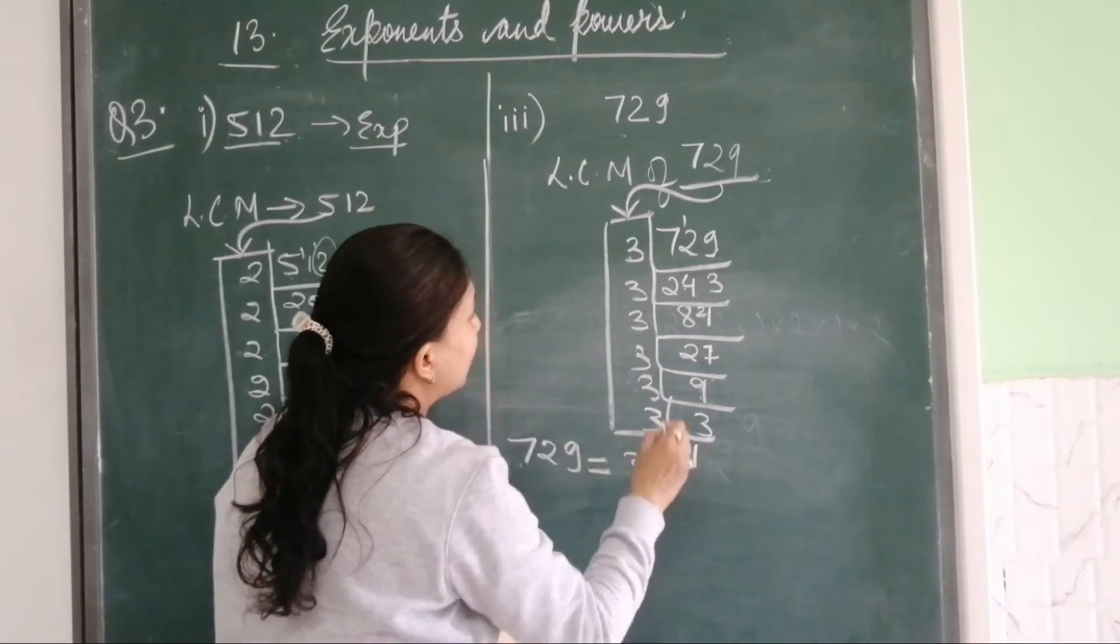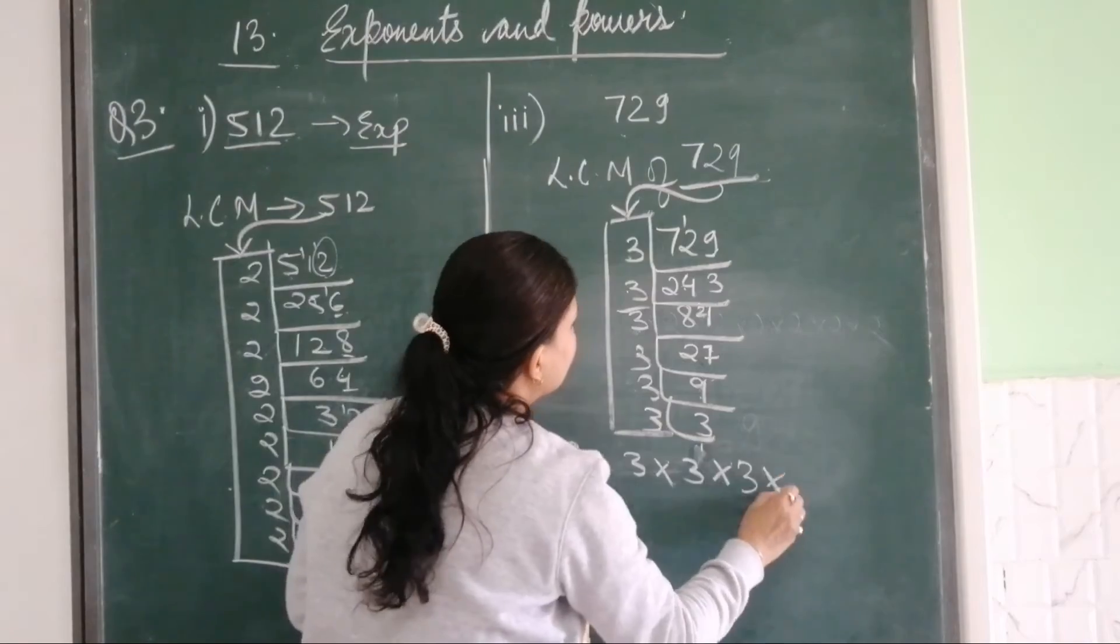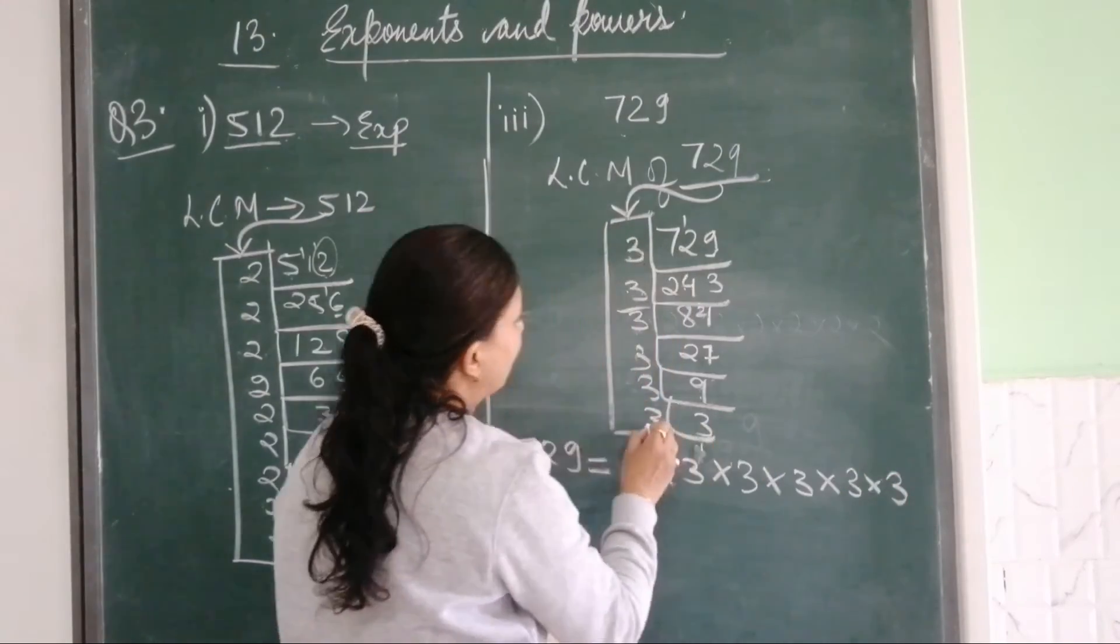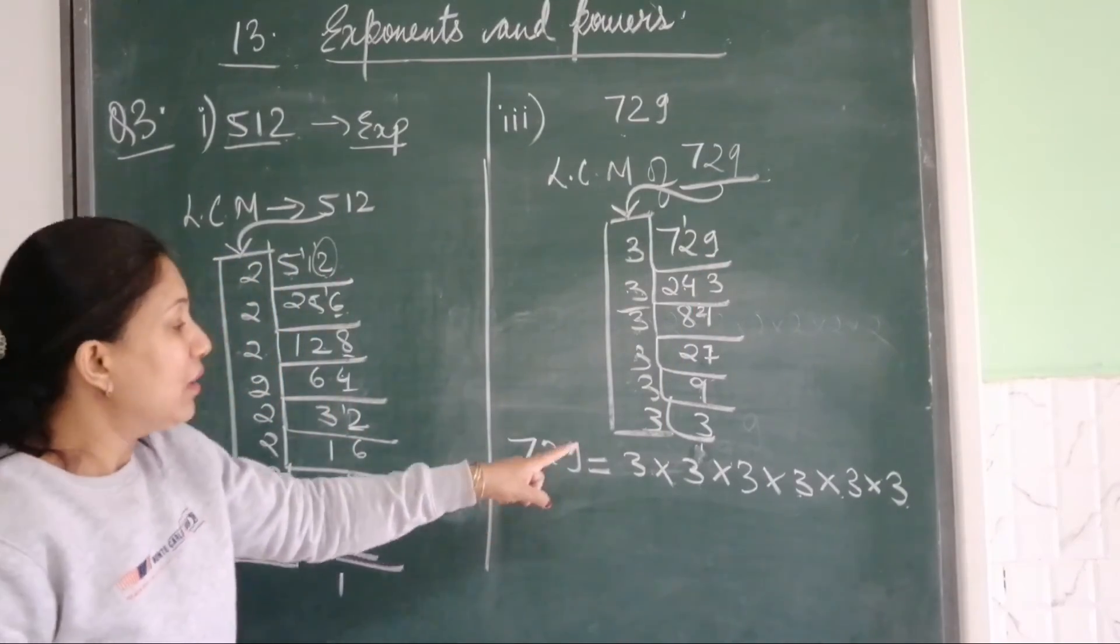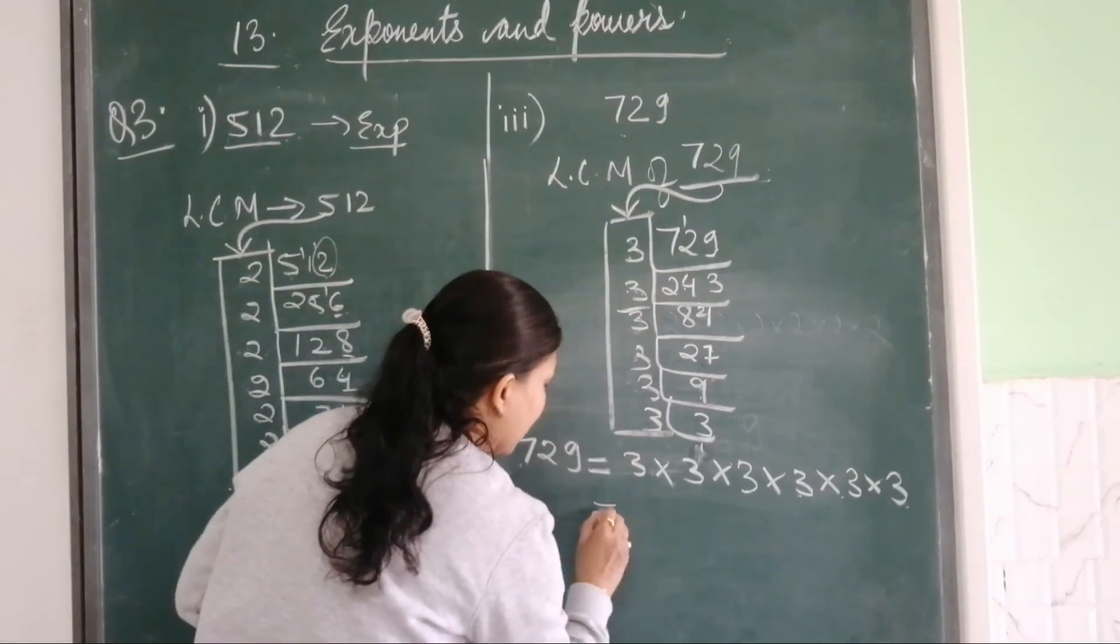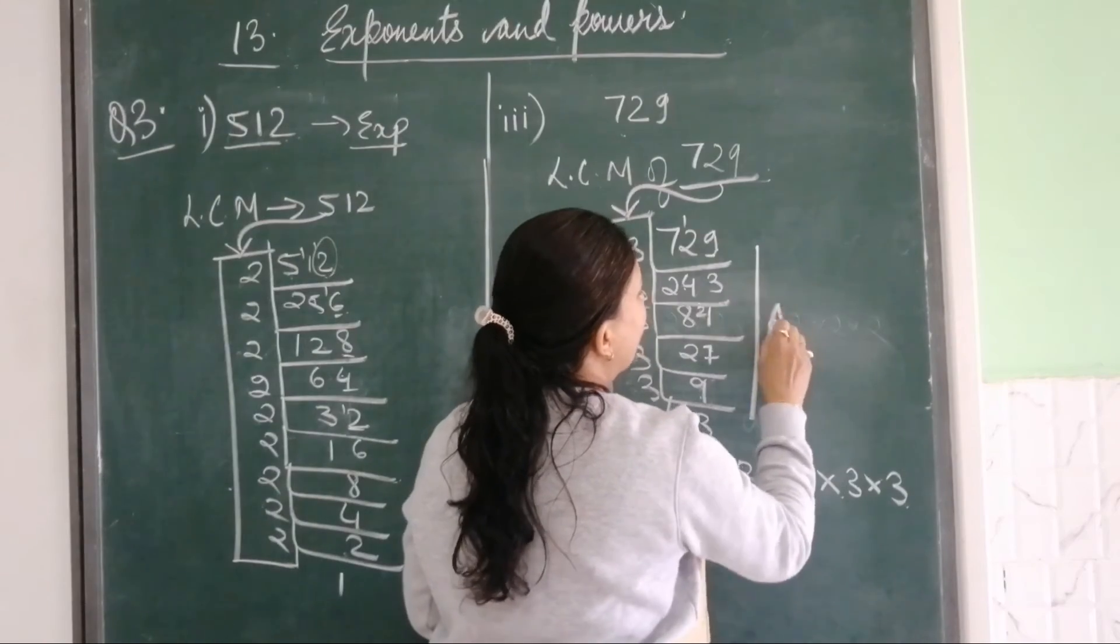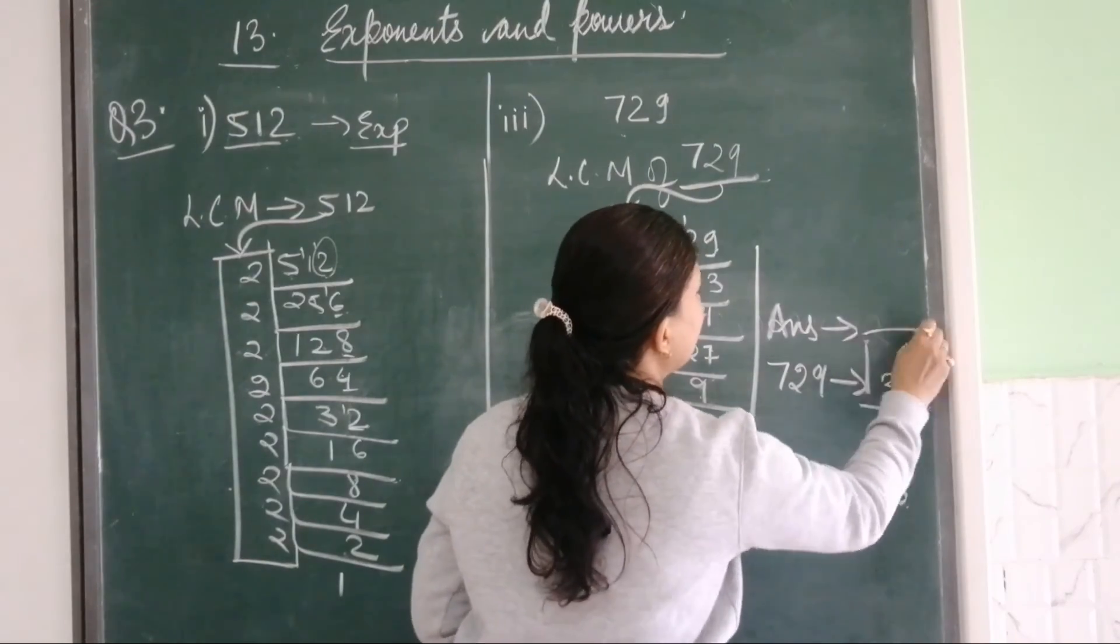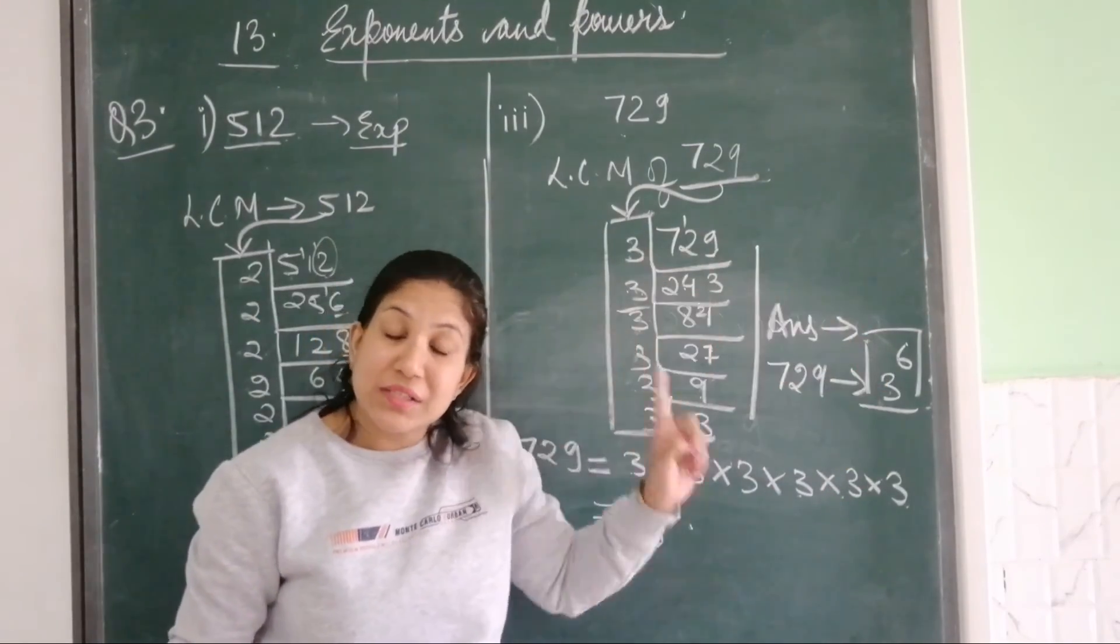So what are the factors of 729? Write down the first one, 3, into the second one 3. Then you know how to write this down. Then again, see 1, 2, 3, 4, 5, and 6. Check 1, 2, 3, 4, 5, 6. Yes. So the factors of this number are 3, 6 times. Whatever you see, just write down. Then again put equal to. Here 3 is repeating 6 times. So exponential form answer will be, exponential form of 729 is 3 power 6. Have you understood? And 3 power 6 means that 3 is repeating 6 times.